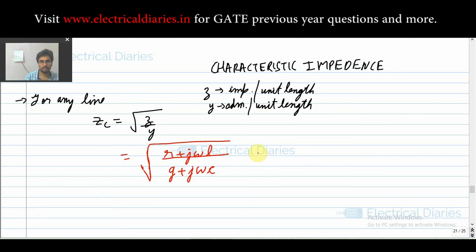Now one more thing we can conclude is the angle of Zc will be given by half of tan inverse ωL by R minus tan inverse ωC by G. Here I have multiplied them with the length of the line, the R, L, G, and C, that is I have written them in capital. Now what is observed is practically, or you can also understand, for a transmission line always our inductance is greater than resistance.